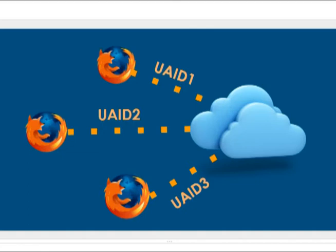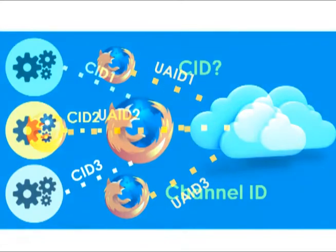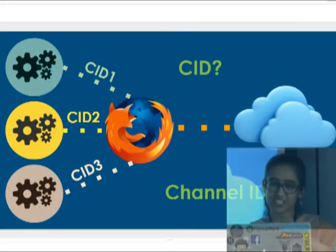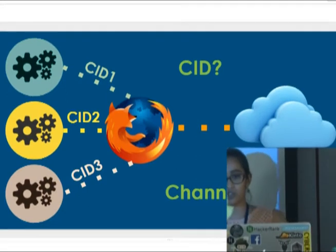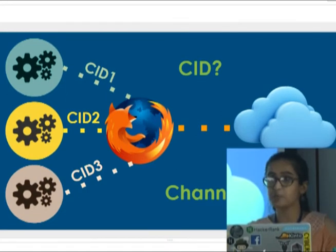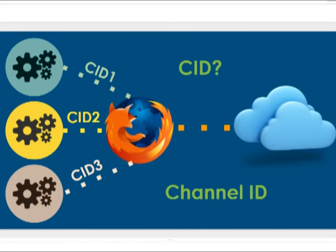Once the browser has received the notification through the UAID, it sends it to the correct service worker using a channel ID, which identifies which website the notification came from. The service worker is then woken up, saying: you have a notification — please display it or do something in the background.